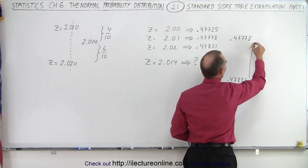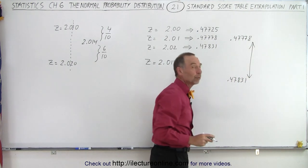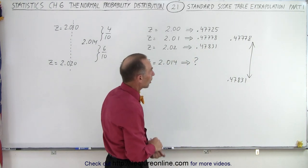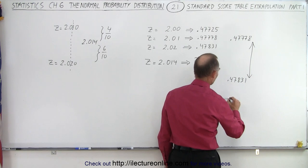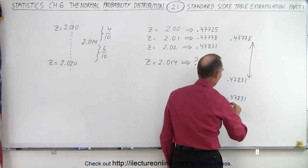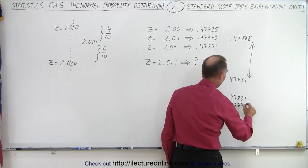So first of all, we need to find the distance between those two. How much are those apart? And we can do that by subtracting the smaller number from the larger number. So 0.47831 minus 0.47778.